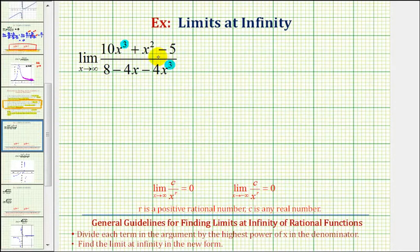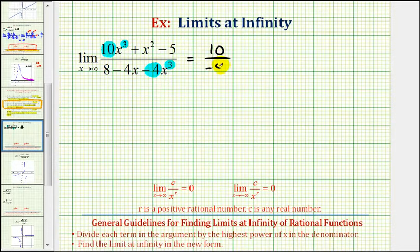The leading coefficient of the numerator is ten. The leading coefficient of the denominator is negative four. Remember, the leading coefficient is the coefficient of the term with the highest degree. And again, because our numerator and denominator are both degree three, the limit will be equal to the ratio of the leading coefficients, or in this case, ten divided by negative four, which simplifies nicely to negative five halves.